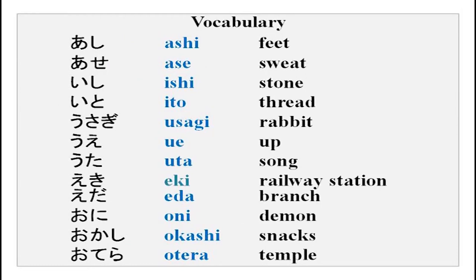There is more vocabulary — repeat after me: ashi, ase, ishi, ito, usagi, ue, uta, eki, eda, oni, okashi, otera. All the meanings are given very clearly — you can learn these.